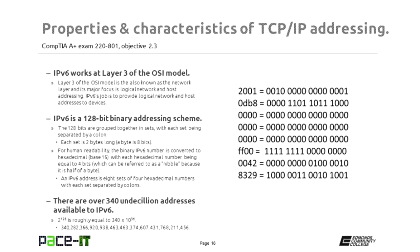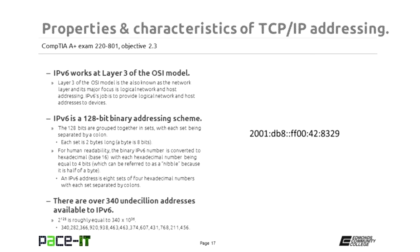An IPv6 address is each set of four hexadecimal numbers, each set separated by a colon. You'll notice there are not enough sets in the example representation shown — we have a set of double colons, which I'll explain later. IPv6 gives us over 340 undecillion addresses. That's 2 to the 128th power, which is roughly equal to 340 times 10 to the 36th power — and there's no way I'm going to read out that full number.